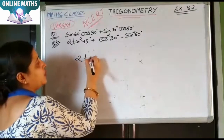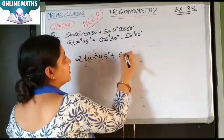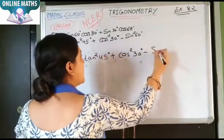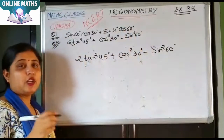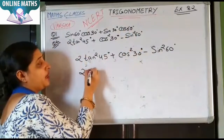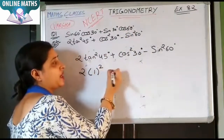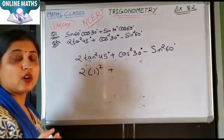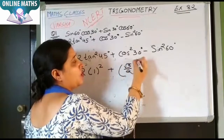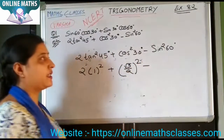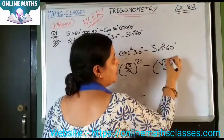Part two: 2tan²45° + cos²30° - sin²60°. The value of tan45 is 1, so tan²45 means 1 squared. The value of cos30 is root 3 by 2 whole square, minus sin²60 where sin60 value is root 3 by 2 whole square.